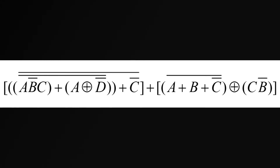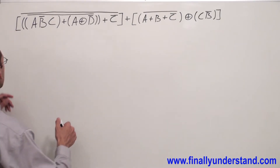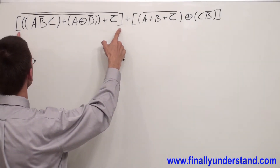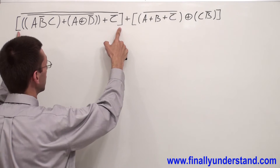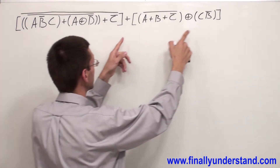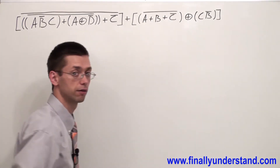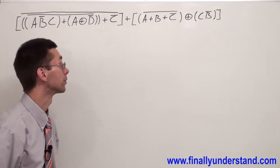Implement the following expression. Like always, we are going to start by seeing how many pairs of brackets we have. We have one pair and this is the second pair. So we are going to have two parts of the circuit.